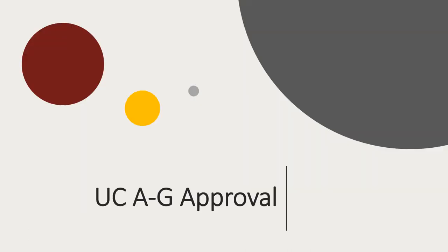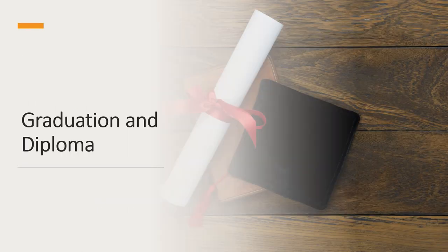All high school level courses at Davidson Academy Online are submitted to the University of California Articulation System for A-G approval. Students must earn 28 total credits in the appropriate subject areas to earn a diploma from Davidson Academy Online. We hold a graduation ceremony in Reno, Nevada each May, which students and families may attend in person or virtually.